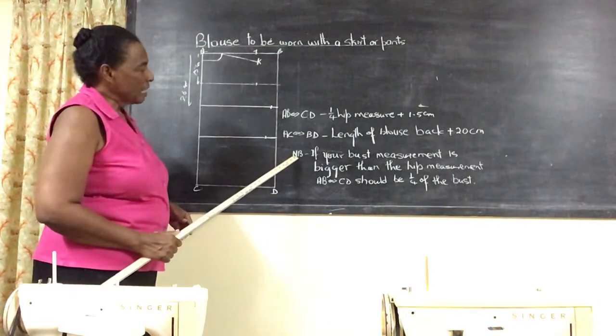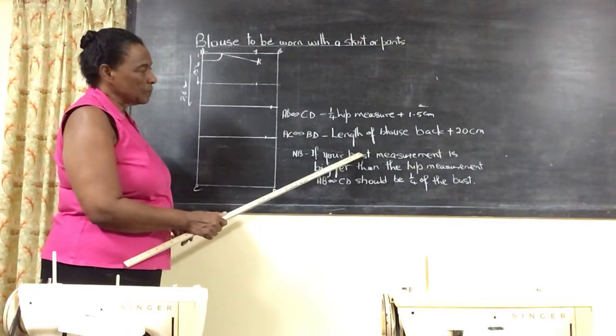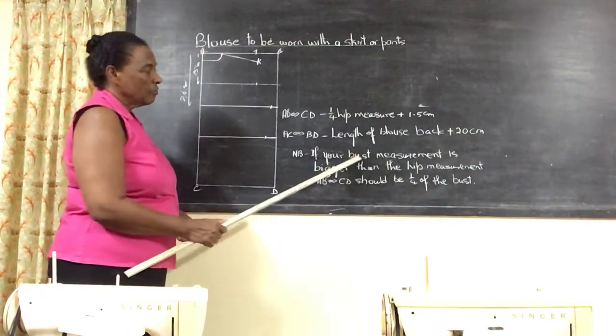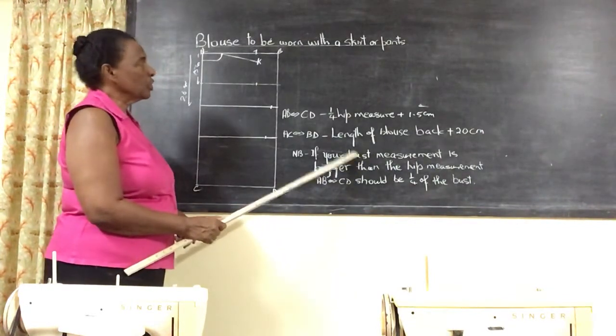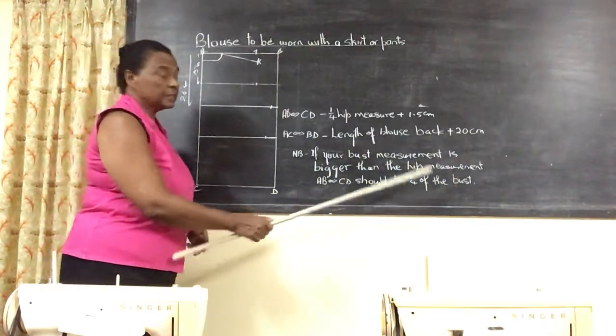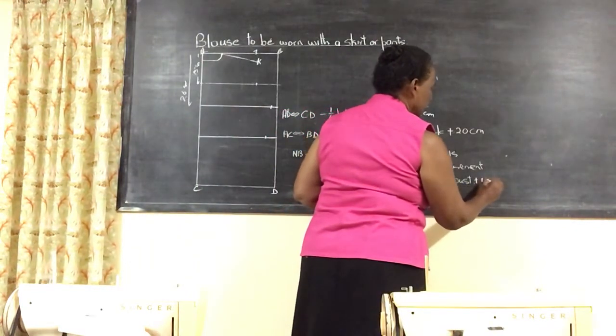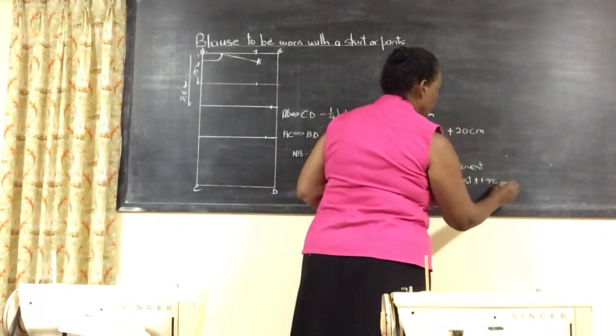Now notice that if your bust is the bigger of the two measurements—because we normally use the bust or the hip—your AB will be a quarter of the bust measurement plus the seam allowance. You must have the seam allowance on it.